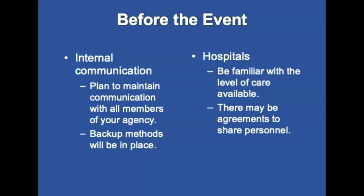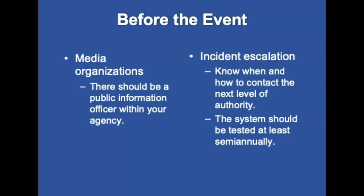Telephone landlines may go down and cell phone towers may be overwhelmed. Include backup procedures such as vehicle fueling in the event of a power outage. There should be a plan to maintain communication with all members of your agency. Familiarize yourself with the level of care available in local hospitals; there may be agreements to provide personnel. Regarding media, train with the public information officer and have a backup. Know when and how to contact the next higher level of authority. Redundancy should be built into the plan and the system tested at least semi-annually.